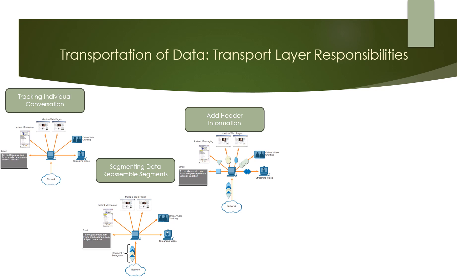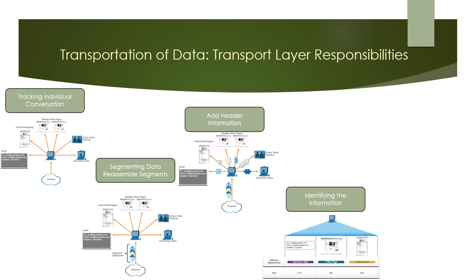The transport layer ensures that even with multiple applications running on a device, all applications receive the correct data. The fourth responsibility is identifying the application. The transport layer must be able to separate and manage multiple communications with different transport requirements. To pass data streams to the proper application, the transport layer identifies the target application using an identifier called a port number. Each software process that needs to access the network is assigned a port number unique to that host.